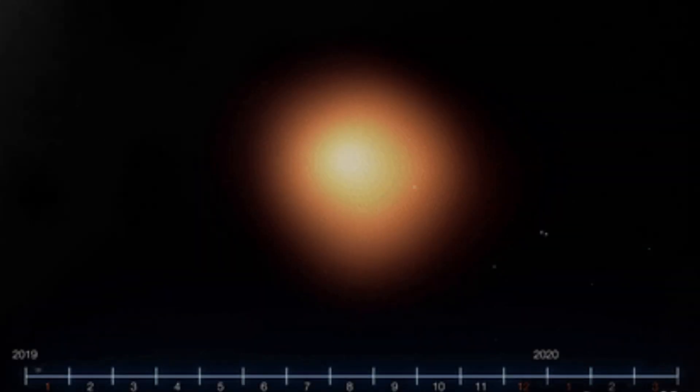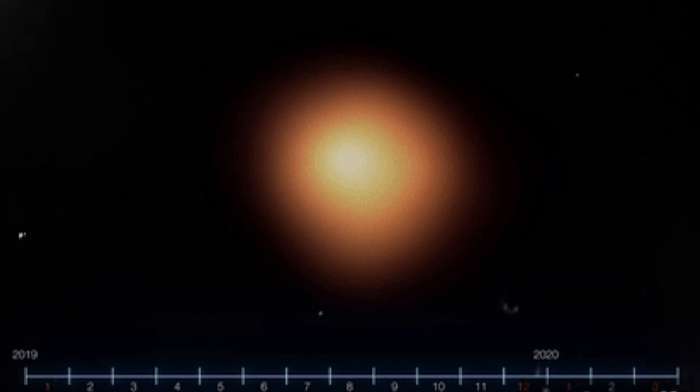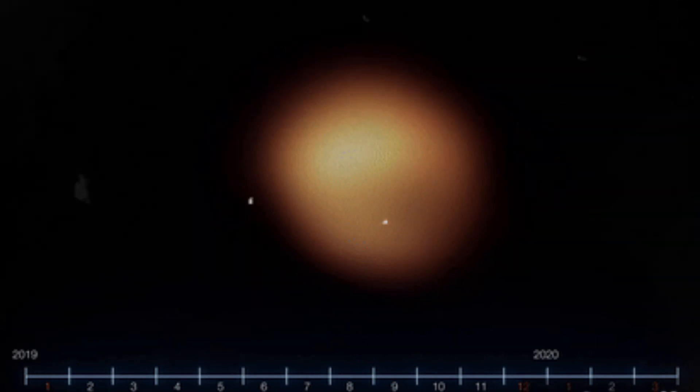So what we saw as a dimming was actually a cosmic dust storm happening on a star hundreds of light years away. Isn't that wild?